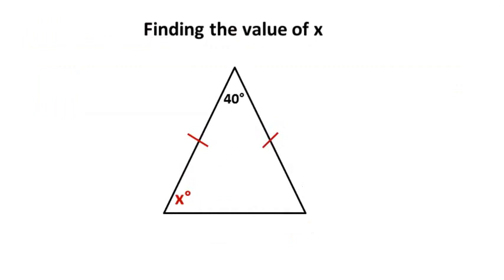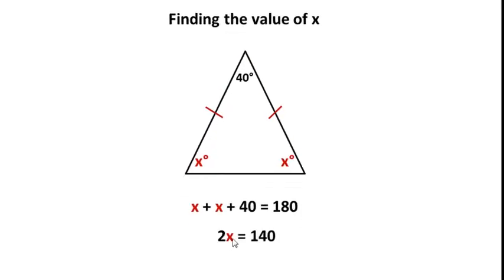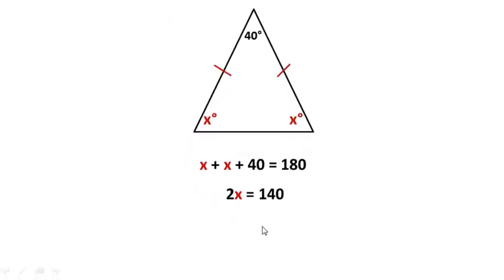We're going to find the value of x here. Well we just learned that if it's an isosceles triangle that the base angles are congruent. So if this is x here, well this has to be x as well. Well now we have all three angles. We can set up an equation. x plus x plus 40 equals 180. And then of course, just doing our basic algebra, x plus x is 2x and then subtract 40 to get 140. Divide both sides by 2. x equals 70.